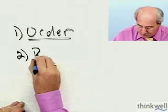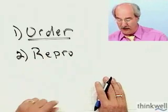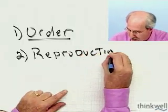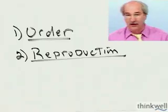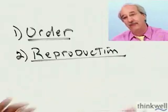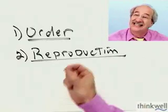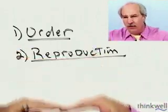After order, the second characteristic is the ability to reproduce. Now, does that mean sterile organisms are not living? Of course not. What I'm talking about is reproduction at the cellular or organismal level. And even more importantly, below the cellular level — you've all heard of DNA. DNA is key here.